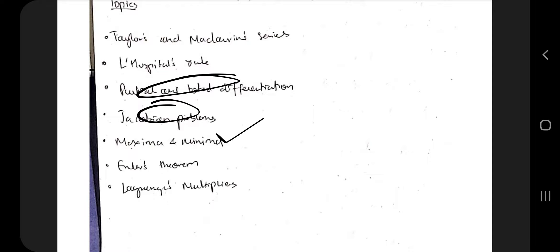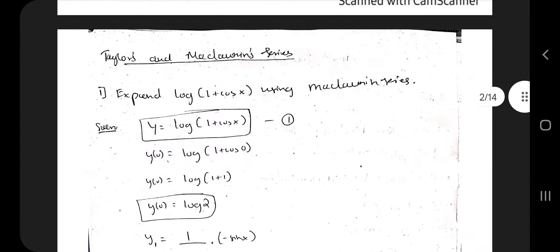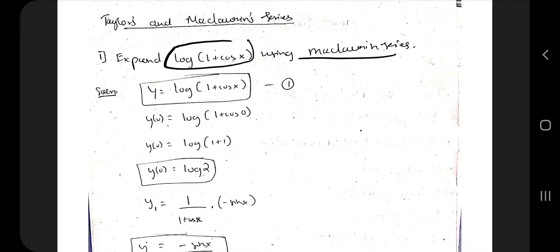Hello everyone, today in this video we will be discussing Module 2 of 21MAT11. The important topics are Maclaurin series, L'Hospital's rule, partial and total differentiation, Jacobians, and how to find maxima and minima. These are the important topics we will be discussing in this module. Let's get started with the first one: Maclaurin's and Taylor series.